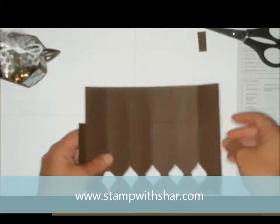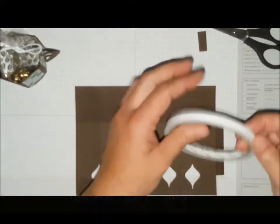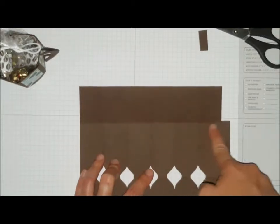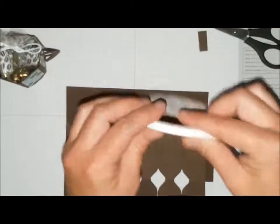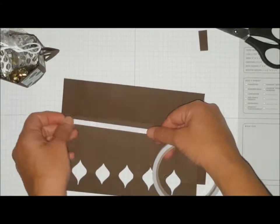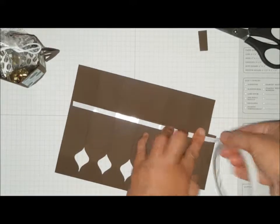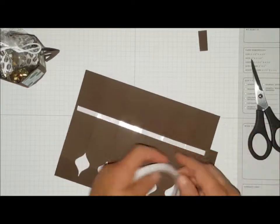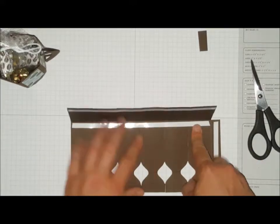What I'm going to do now is add some tear and tape. I'm going to add it on the top just below the score line and then on this little tab on the front and on the back, just below the score line and on either side of the tab.